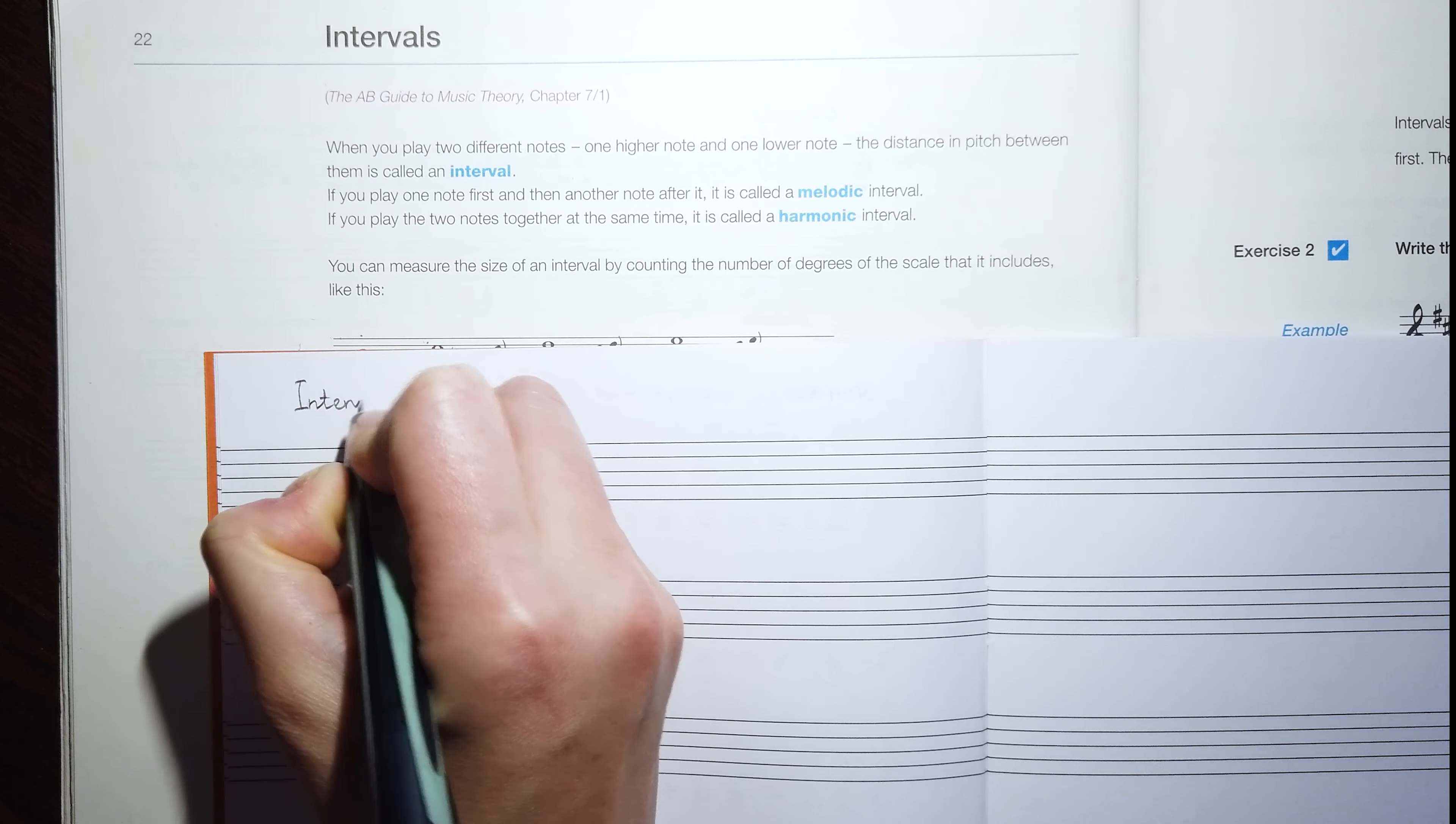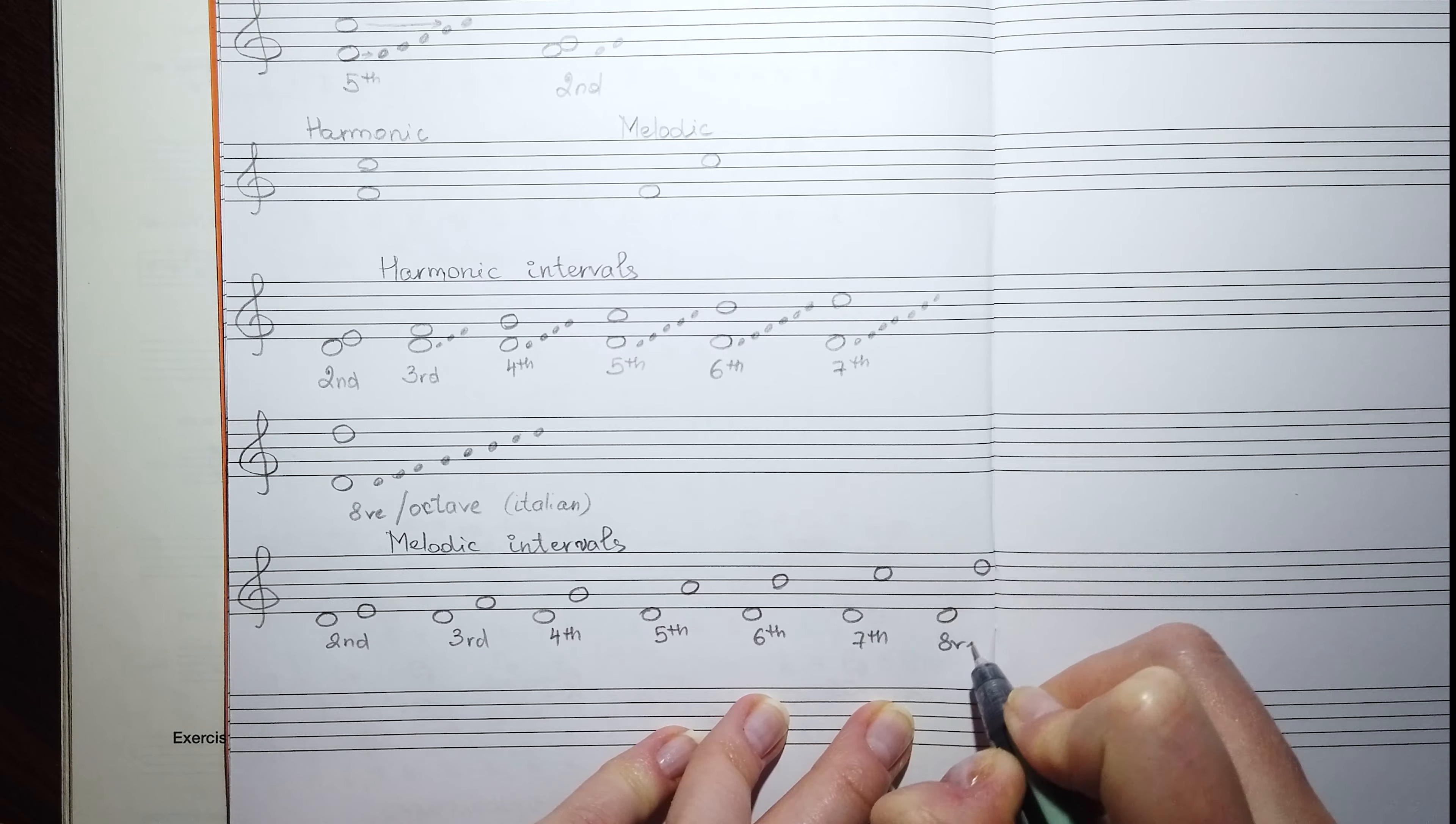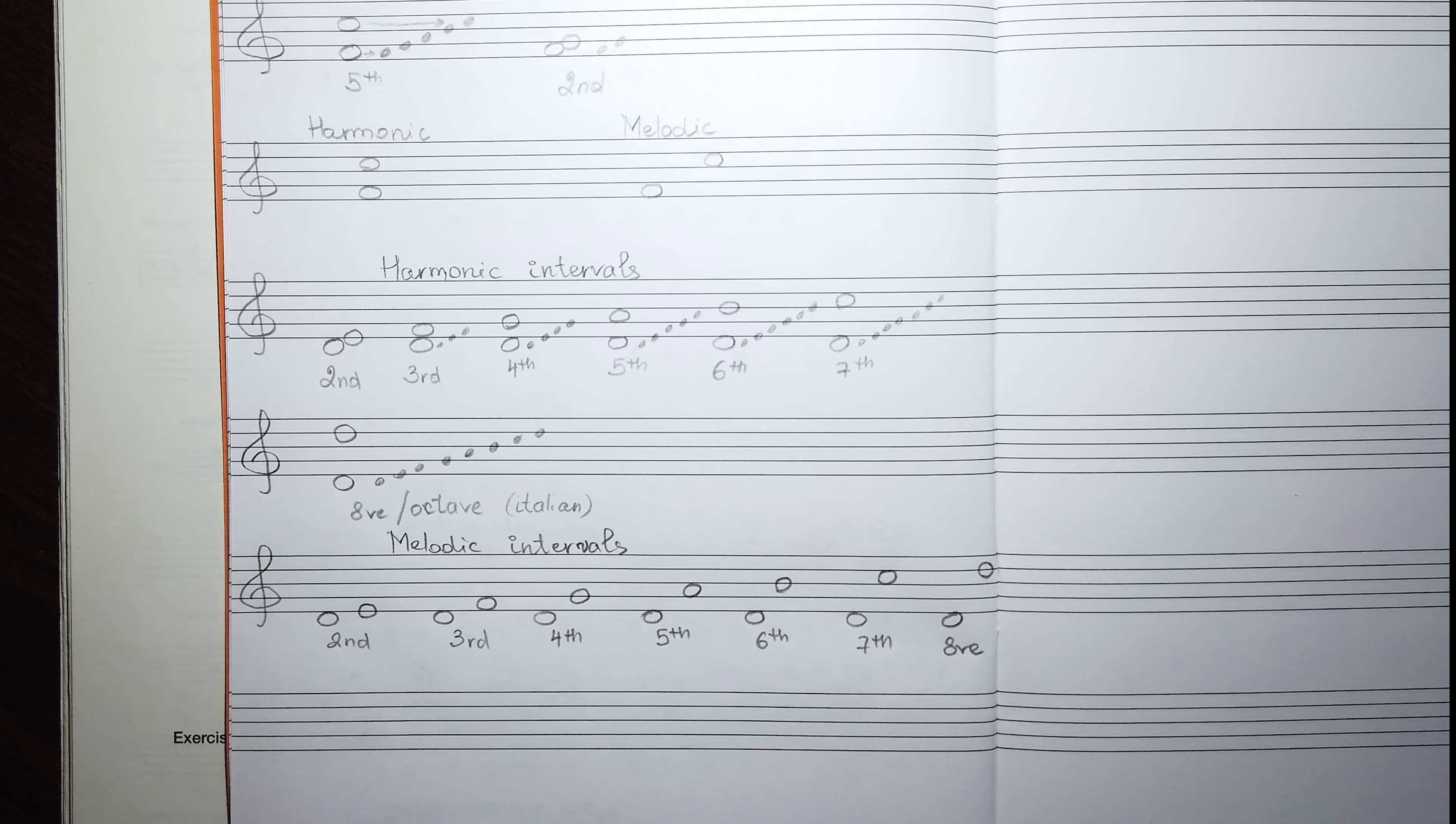For written intervals, when you have to write the melodic intervals, you need to place the notes next to each other with a small distance between them. So the notes are going to be the same—second, third, fourth—but you can see that I'll start to write them with distance, and we name this type of writing and playing melodic interval, from the second until the octave.